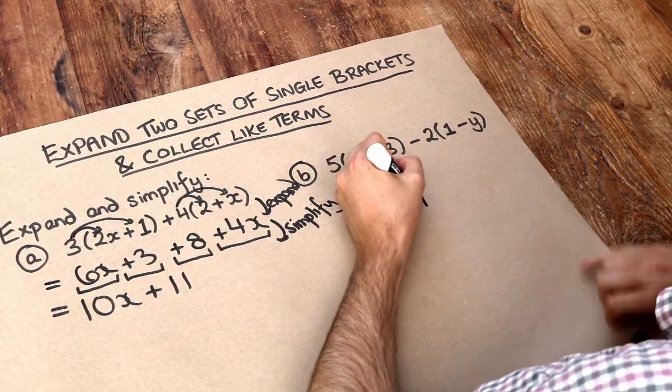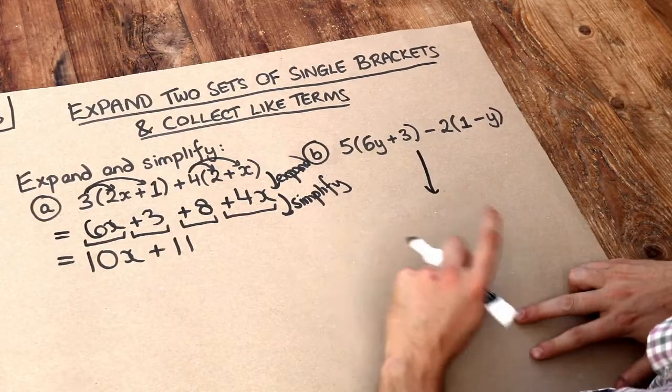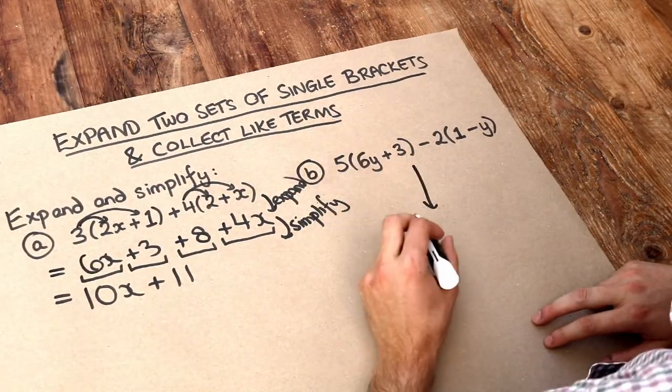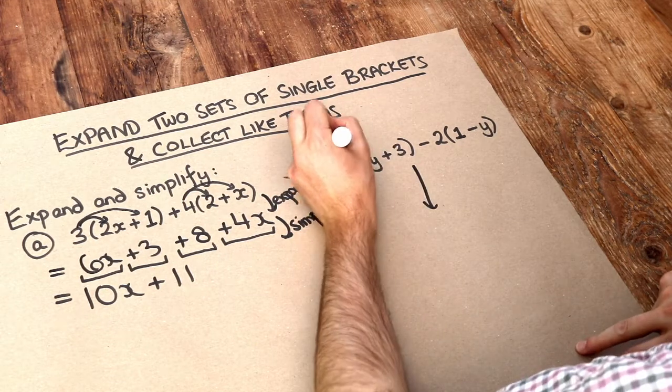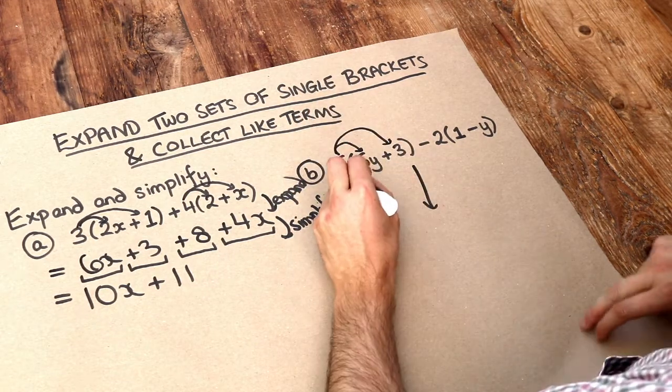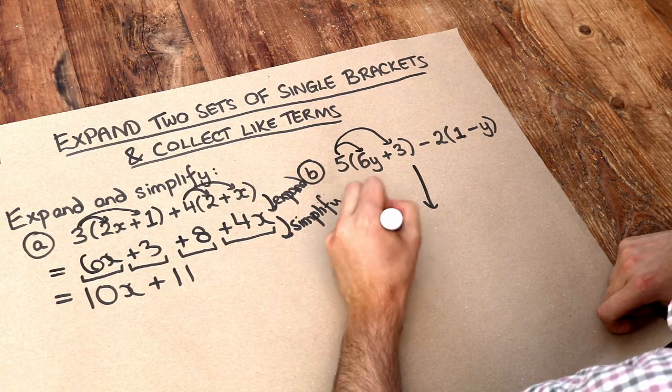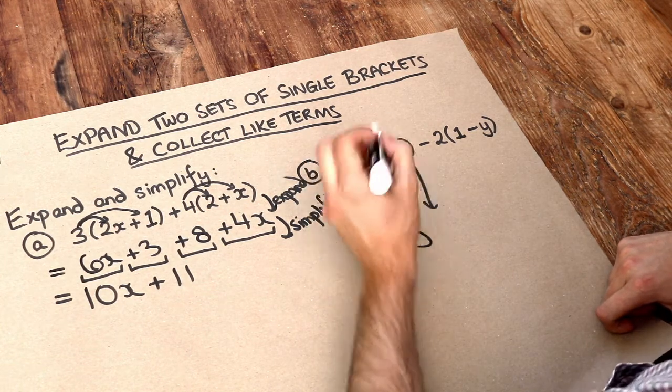Let's do the same thing with this second example. We have to be careful with signs here. Now we're first going to do the 5 times the 6y and the 5 times the 3. Well 5 lots of 6y is 30 lots of y. 5 lots of 3 is 15.